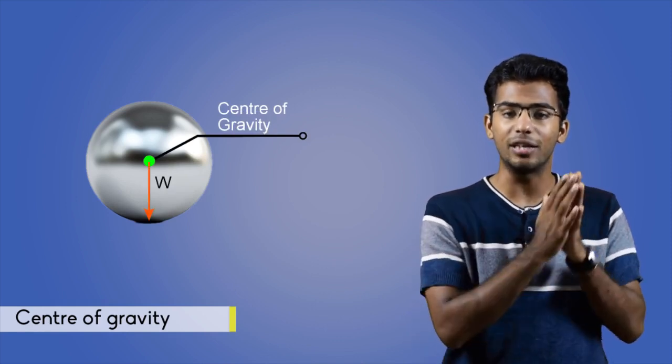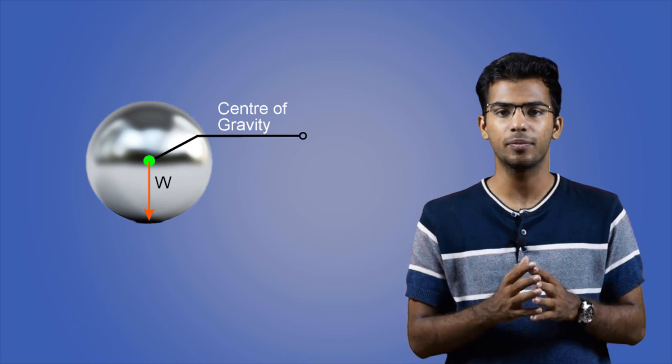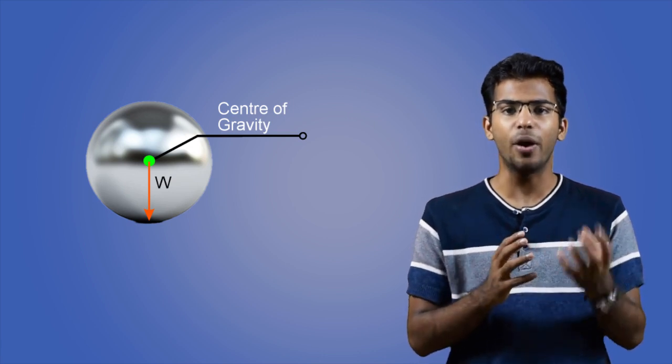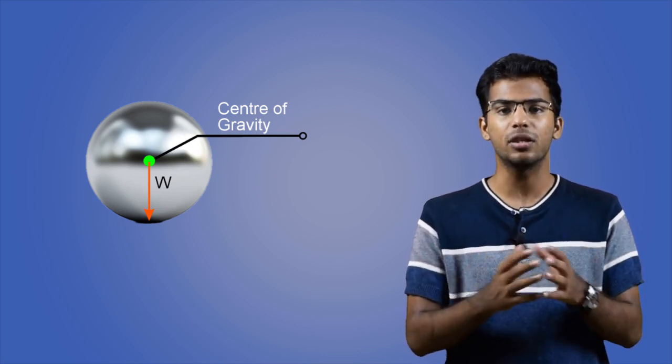Simply put, it is the point on which you can balance the whole body. For example, if you take a book, you can balance the book on a single point on one finger. That point is the center of gravity of that book. It applies to all the objects and bodies.